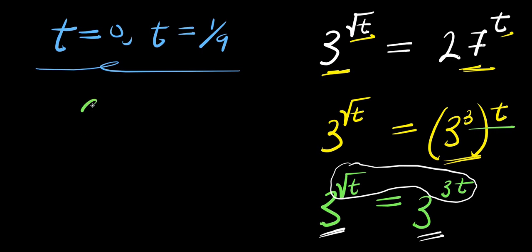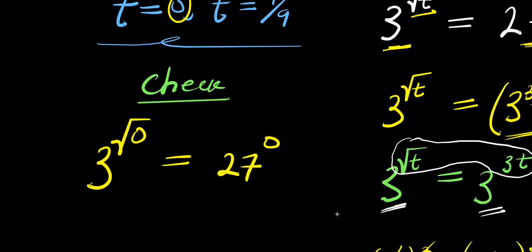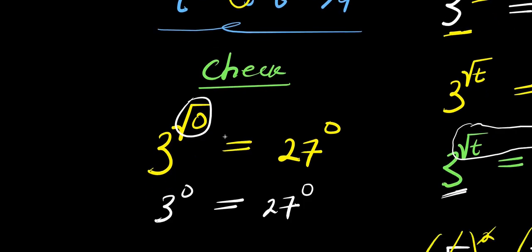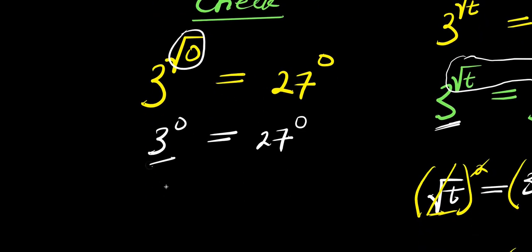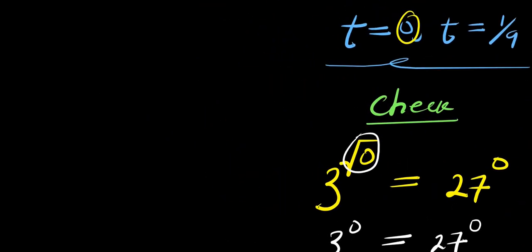Now the next thing we are going to do is check each of these solutions by inserting these values back into the original equation. Let's start with when t equals 0: I have 3 power square root of 0 equals 27 power 0. Square root of 0 is 0, so I have 3 power 0 equals 27 power 0. Any number raised to the power 0 is 1, so this gives 1 equals 1. This checks out.